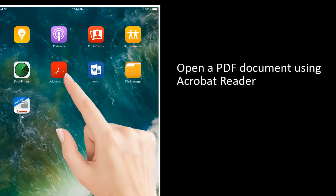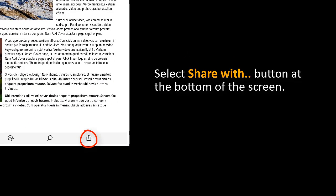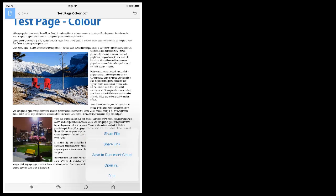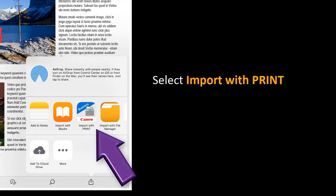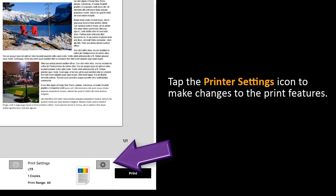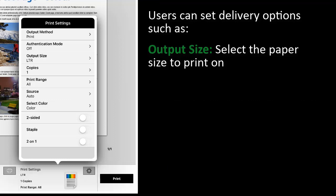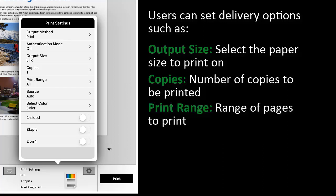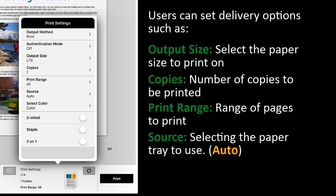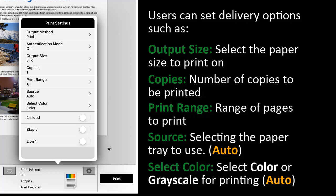Open a PDF document using Acrobat Reader and select the Share With button at the bottom of the screen. Select Open In and select Import with Print. Tap the printer setting icon to make changes to the printer features. Users can set delivery options such as output size, which allows you to select the paper size to print on; copies, the number of copies to be printed; print range, the range of pages to print; source, to select the paper tray to use. Default is auto. Select color or grayscale for printing; default is auto, but this depends on your device.